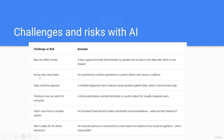Errors may cause harm — for example, an autonomous vehicle experiencing a system failure and causing a collision. Data could be exposed — a medical diagnostic bot trained on sensitive patient data which is stored insecurely. Solutions may not work for everyone — a home automation assistant that provides no audio output for visually impaired users. Users must trust a complex system — an AI-based financial tool makes investment recommendations, but what are they based on? Who is liable for AI-driven decisions? — for example, an innocent person convicted of a crime based on facial recognition evidence.